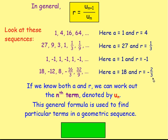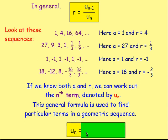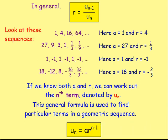If you know both a and r — so in each of these you know both a and r — you can work out any term. You can work out the nth term, which is denoted u(n). This is the formula for working out u(n): u(n) equals a times r to the power of n minus one.